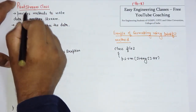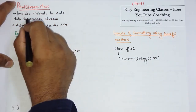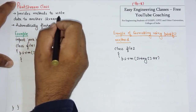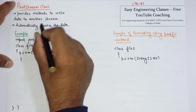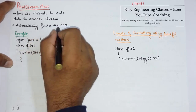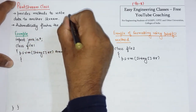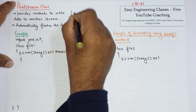PrintStream class provides methods to write data to another stream. Since the PrintStream class automatically flushes the data, there is no need to call the flush method.